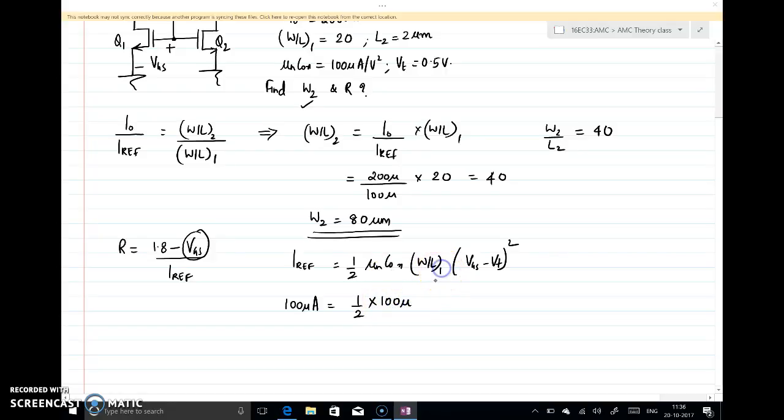And this is W by L of 1 - W by L of 1 is given as 20 - and Vgs minus 0.5 the whole square. From this you can find Vgs. So I'll cancel these two, this one is 20, so we have Vgs minus 0.5 the whole square equal to 0.1, which if you do it you'll get Vgs as 0.816.